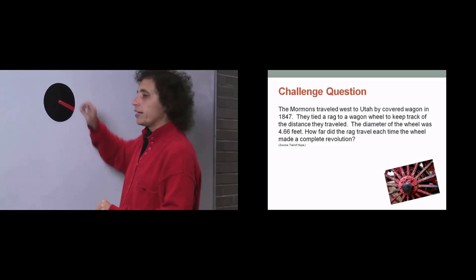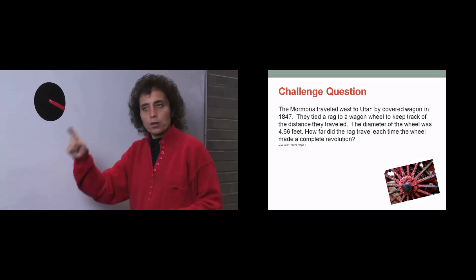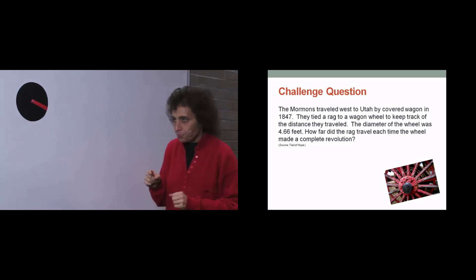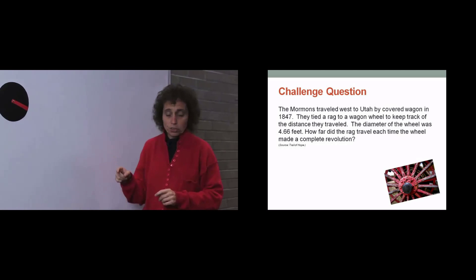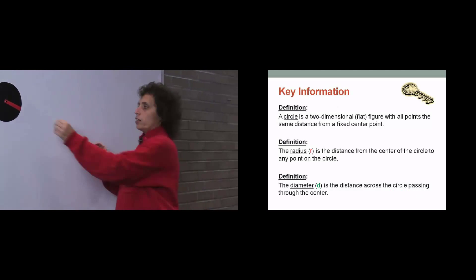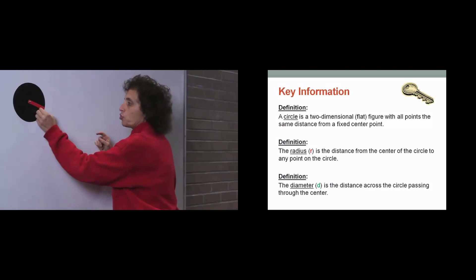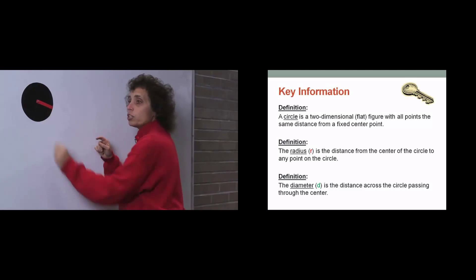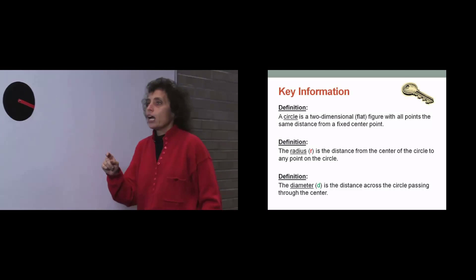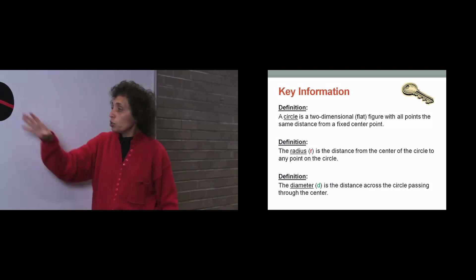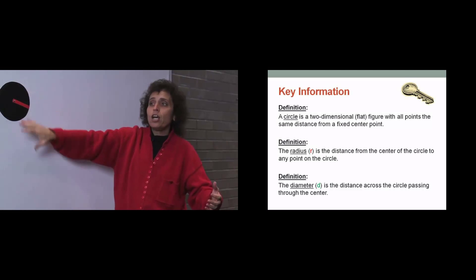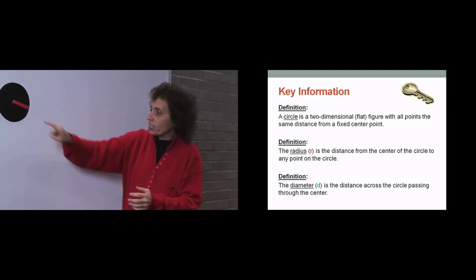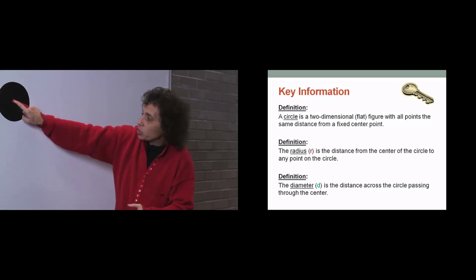So I have my handy-dandy circle. I want to talk about the parts of the circle. A circle is a 2-dimensional figure — that's why it's flat — a 2-dimensional flat figure with all points the same distance from a given point.